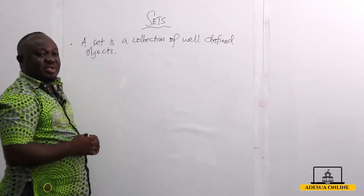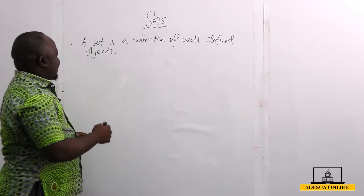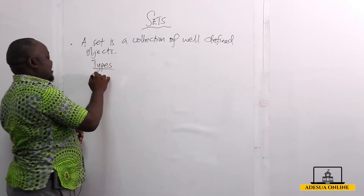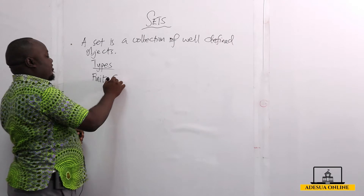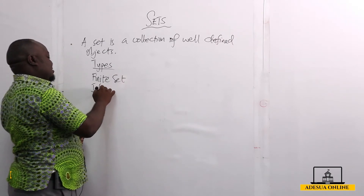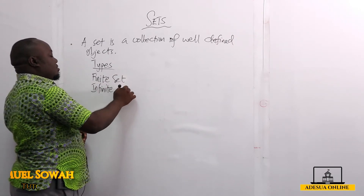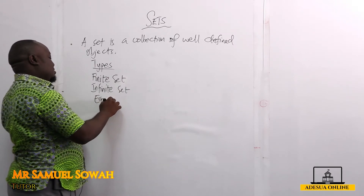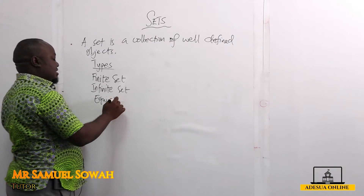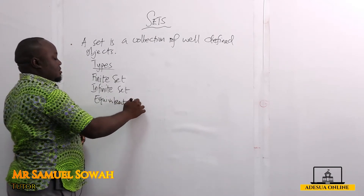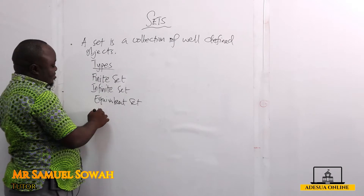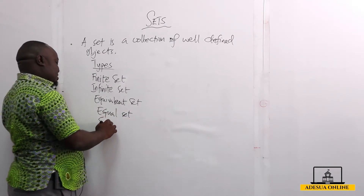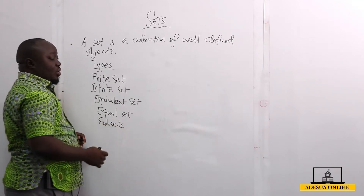Now we have some different types of sets we can talk about. We can talk about a finite set, an infinite set. We can also have equivalent sets, and then we have equal sets. We have subsets, and so on and so forth.